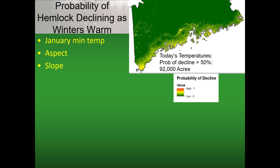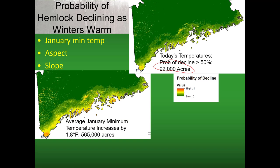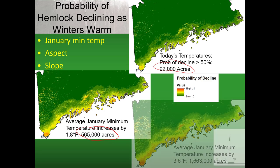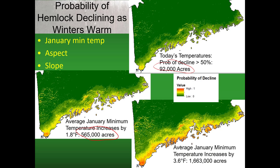In the early 2000s going back into the 1990s, we're predicting that about 92,000 acres had a greater than 50 percent chance of having declining hemlock — in just about all coastal areas. If we increase the January minimum temperature by 1.8 degrees Fahrenheit, then the amount of areas likely to see decline increases five-fold, up to over 500,000 acres. And if the temperature increases by 3.6 degrees Fahrenheit, which some models are predicting, then we're dealing with over one and a half million acres where we'll have declining hemlock — mostly spreading inland, similar to what we're seeing with the balsam woolly adelgid.